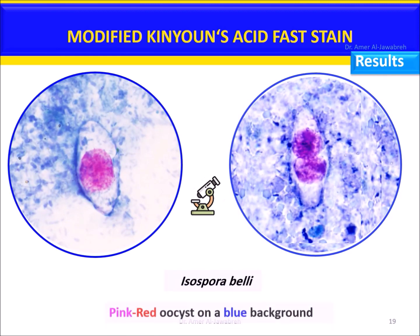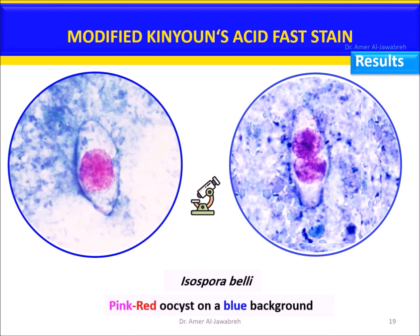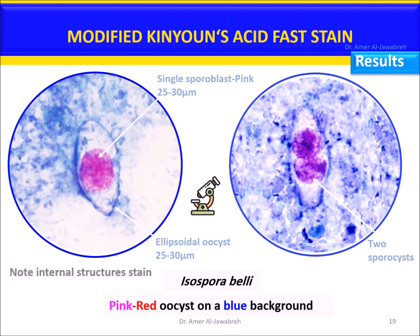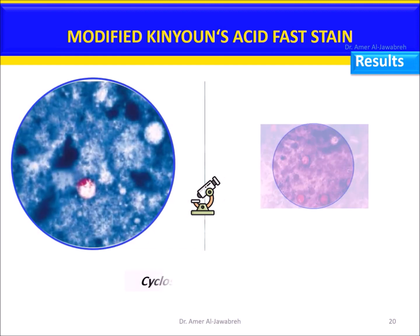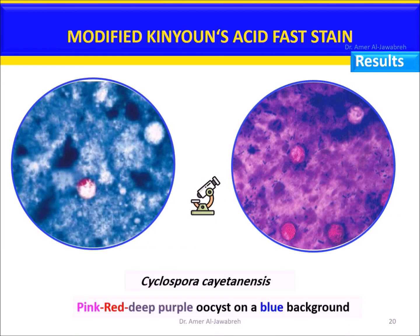Isospora belli: pink-red oocyst on a blue background, ellipsoidal oocyst with a single sporoblast and two sporocysts. Note: only internal structures are stained. Cyclospora cayetanensis: pink-red or deep purple oocyst on a blue background, 7–10 micrometers. May fail to uptake stain, showing variation in staining.